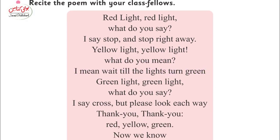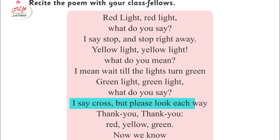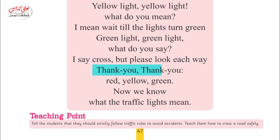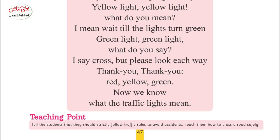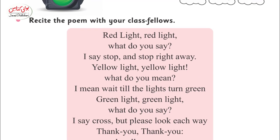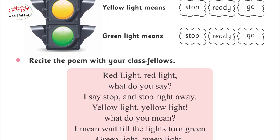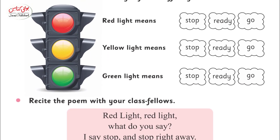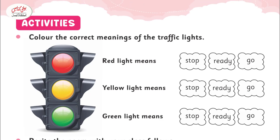Green light, green light, what do you say? I say cross, but please look each way. Red, yellow, green — now we know what the traffic lights mean. This is all about this chapter. Recite this poem so you can engage your students and they can enjoy it and learn all about traffic rules and traffic lights. Thank you so much for watching the video.